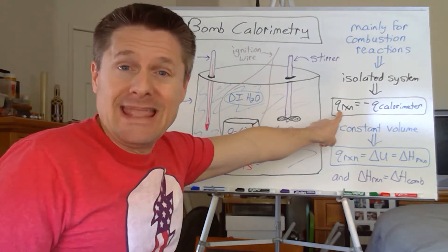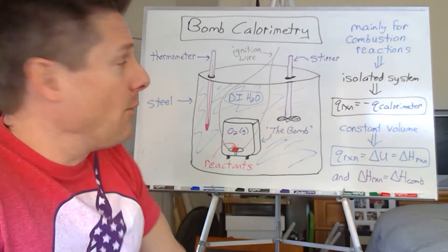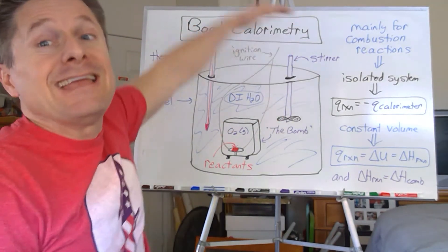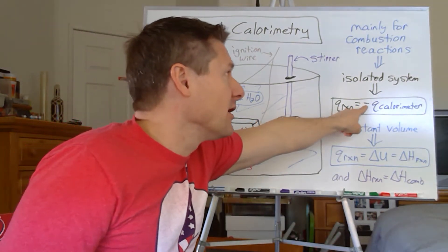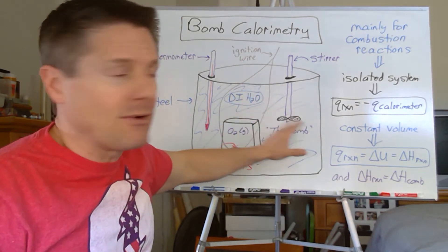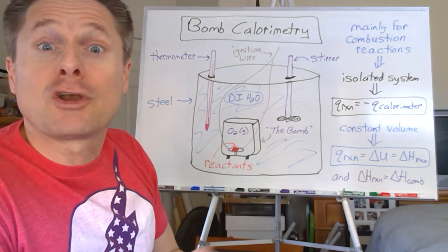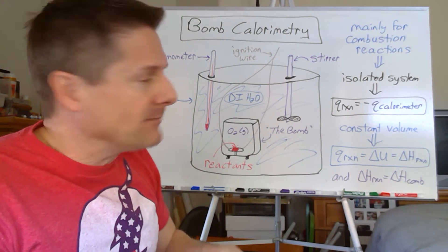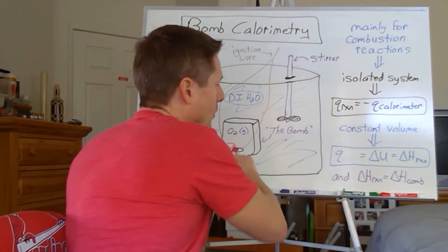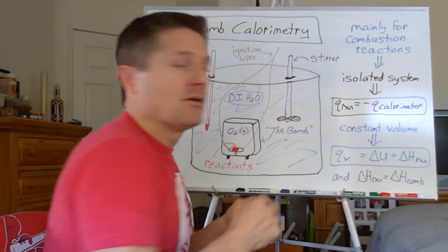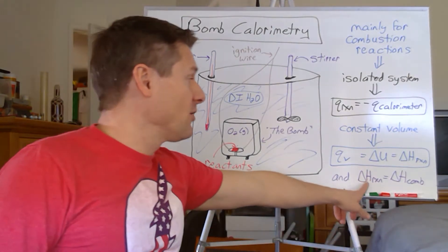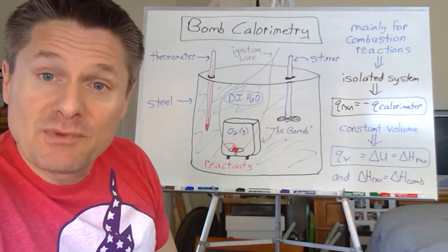The heat flow from the reaction is equal to the heat flow of the calorimeter. Because it's an isolated system, we measure the temperature increase, and the energy it would take to restore it to its initial temperature is the heat of reaction - so we put a negative sign there. First law of thermodynamics. Since we're at constant volume, the heat flow equals the change in internal energy, which equals delta H. Since we're mainly doing combustions, we can call this delta H combustion specifically.